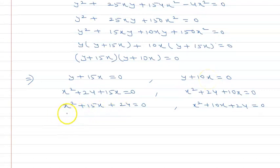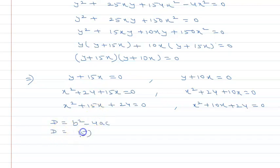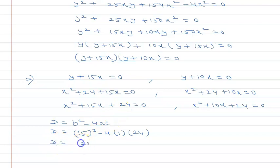I will not factorize the first one because the factors cannot be made easily, so I will use the quadratic formula. The discriminant is b squared minus 4ac. So 15 squared minus 4 times 1 times 24: that is 225 minus 96, which gives 129.